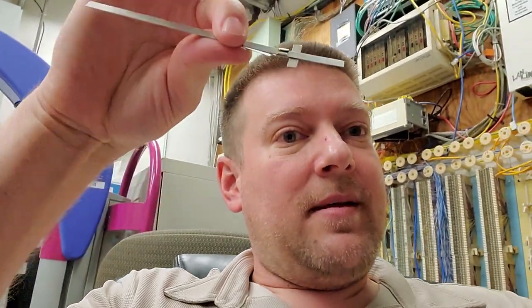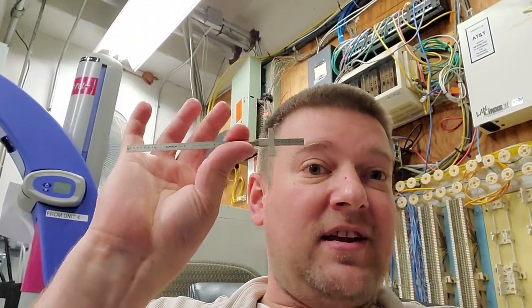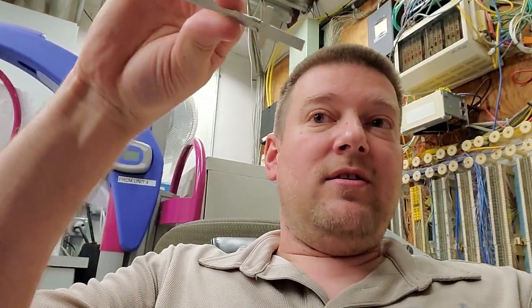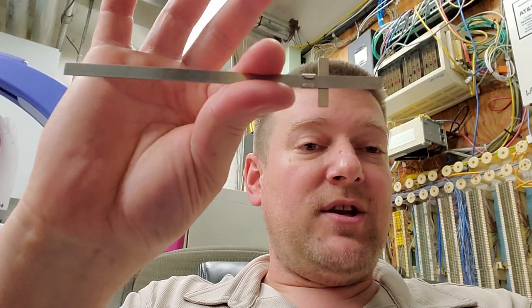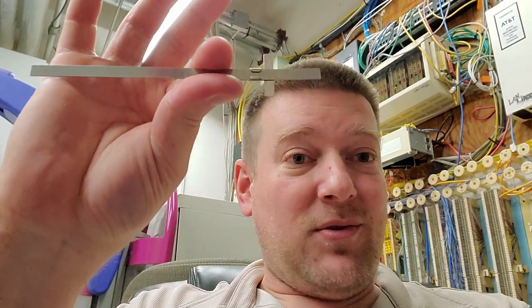So once you determine it's coarse thread, there's certain diameters that have certain thread pitch. A thread pitch would be the amount of threads per inch, TPI. So what you do is you take your fancy little depth gauge or a caliper and you mark it. You set the depth at exactly one inch and you count the amount of threads.